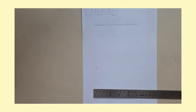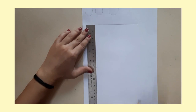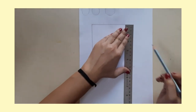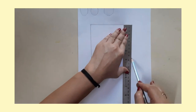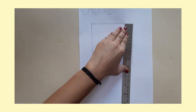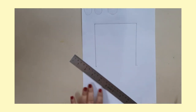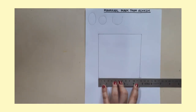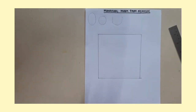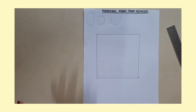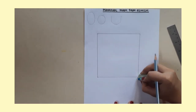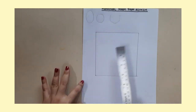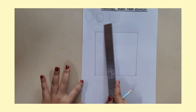Now at right angles I'm going to join these points to my upper line. Then I will join this side to complete the square. A bit of practice will help you do this well. This is my square for the face. Now he wears a headgear also, like you've seen in the picture.